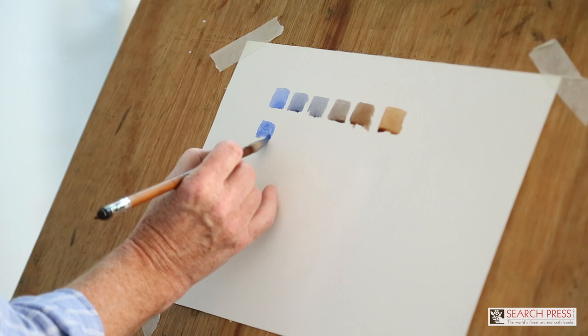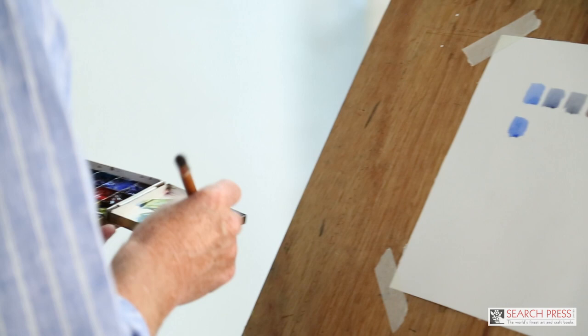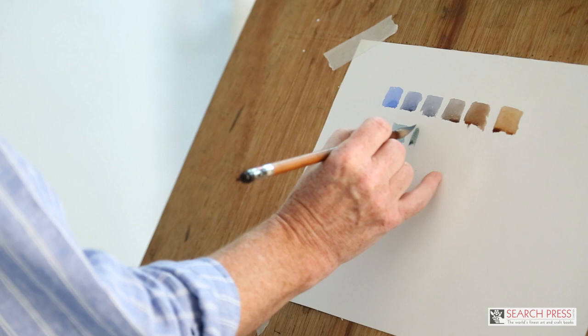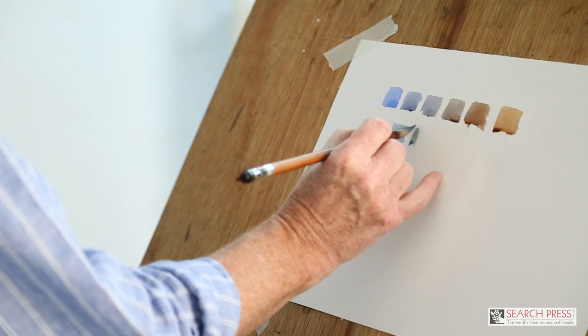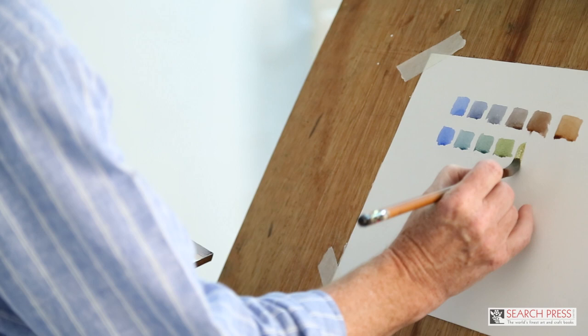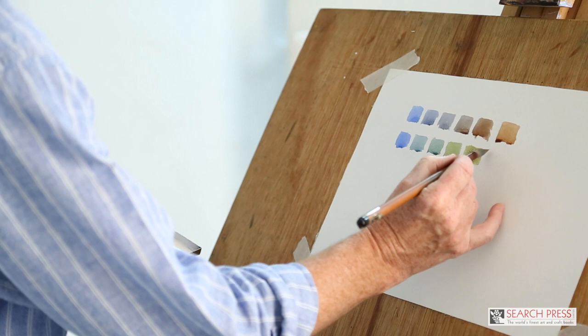Now, if we start with our Cobalt Blue again, and this time I'm going to add a touch of Quinacridone Gold. Look what happens. We get that lovely dull green, still more blue than green. A little bit more, and the green starts to strengthen. We get a brighter green. Remember, there's still some green visible in winter subjects because we've got ivy and we've got conifers. The green gets warmer and warmer.